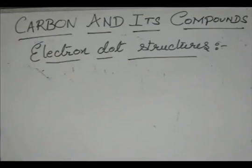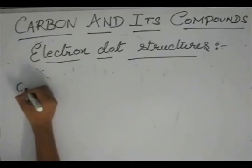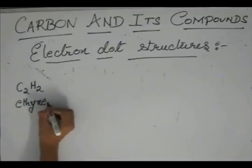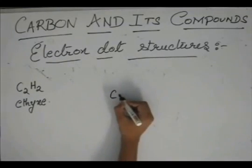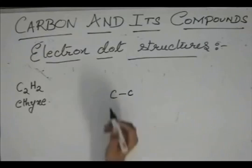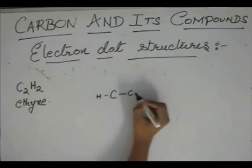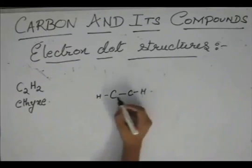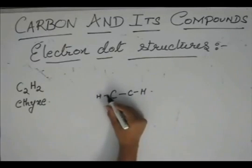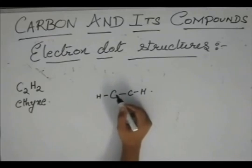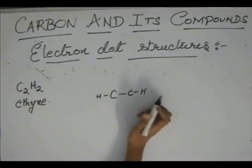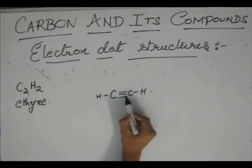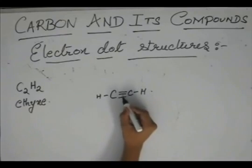What if there is a triple bond between the two carbons? As in C2H2, which is called ethyne. Now, we have only two hydrogens, so we place one hydrogen over each carbon atom. So, there are only two valencies which are satisfied, and two valencies of carbon are still left to be satisfied — it needs to have two more bonds. So, one bond and another bond over here makes a triple bond.